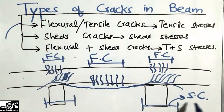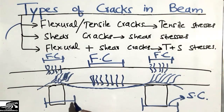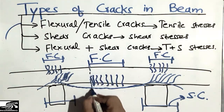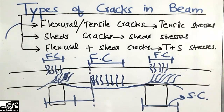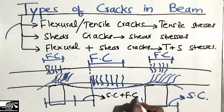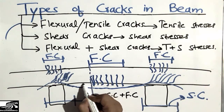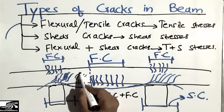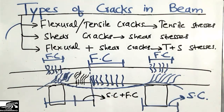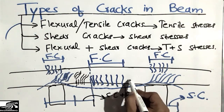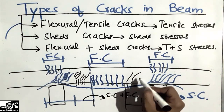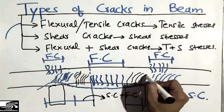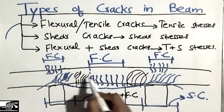The portion between the shear crack zone and the flexure crack zone is a combination region. In this zone, we have both shear cracks and flexure cracks occurring together. The shear cracks begin at the bottom and curve upward, combining with the flexure cracks. Similarly, near the joint, we have tensile cracks at one location and shear cracks at another, making this entire intermediate region a combination zone.